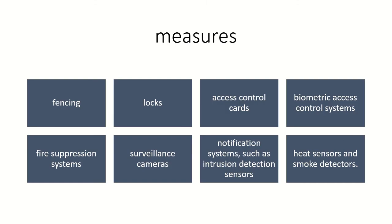Physical security measures include fencing — walls and nets — then locks, access control cards, and smart codes as an authentication and verification process. You also have biometric access control systems, fire suppression systems, surveillance cameras, and notification systems such as intrusion detection sensors, heat sensors, and smoke detectors.